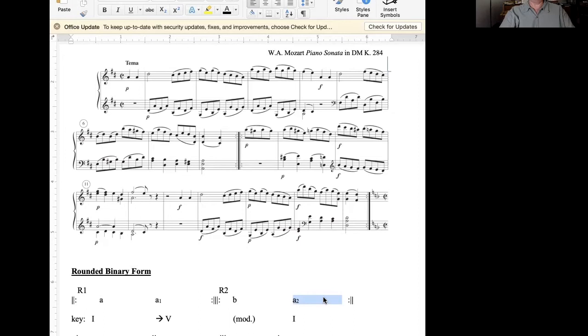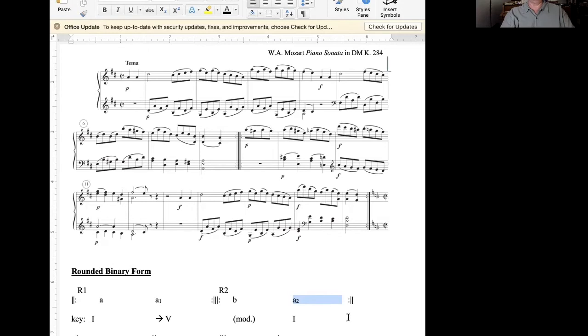When the opening theme does return, here it's in measure 13, we get just a single phrase that works its way to a perfect authentic cadence in D. In the section of a sonata form that's called a recapitulation, all of the material of the exposition, or nearly all of it, maybe even some extra material, will be present. Except now, instead of being divided into two separate key areas, a primary key and a secondary key, all of this music will essentially stay in the tonic key.